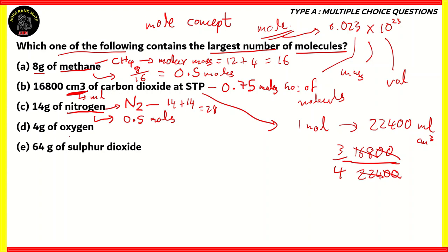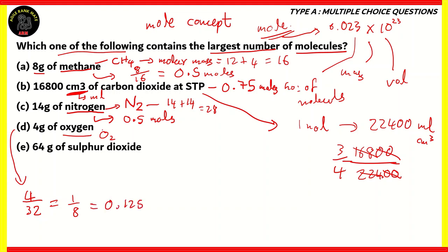Option D: 4 grams of oxygen. Oxygen exists as O₂. One mole of oxygen atoms weighs 16 grams, so one mole of oxygen molecules weighs 32 grams. The number of moles here is 4 ÷ 32 = 1/8 = 0.125 moles.